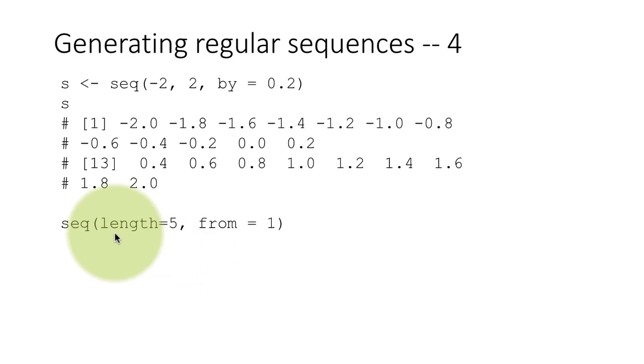I can then also say, give me a sequence of a certain length. Till now we've been saying start from this, go up to that, and we've been controlling how much it should increase by, by default that is 1. On the other hand, I can give the starting number and just give a length, in which case it's going to determine the finishing number by itself. Here we get 1, 2, 3, 4, 5 because we have not specified how much to increment each time by, and the default for that is 1. Or I can say explicitly length=5, start from 1, increase by 0.3. So it will do 1, 1.3, 1.6, 1.9, 2.2. Since we wanted a sequence of length 5, it stops at 2.2.